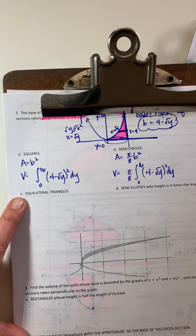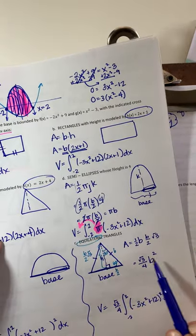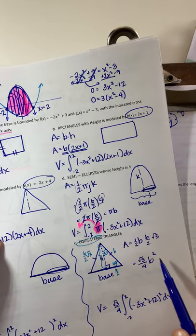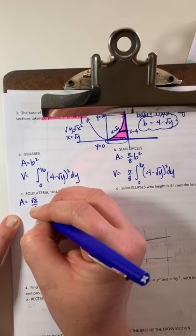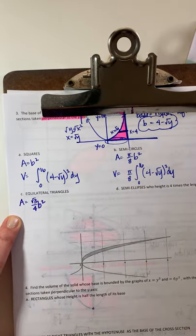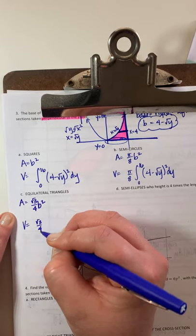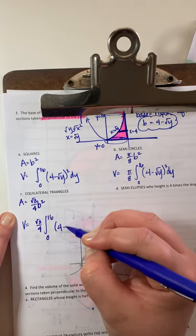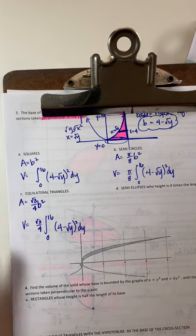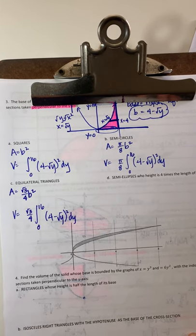For equilateral triangle cross-sections: the formula is root 3 over 4 times B squared. Volume is the integral, with root 3 over 4 out front, from 0 to 16 of 4 minus root y, squared, dy.